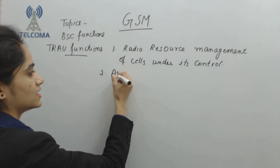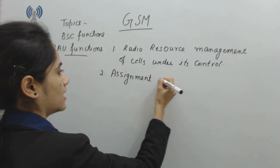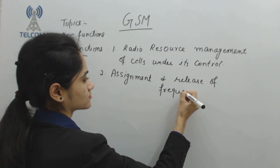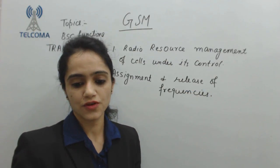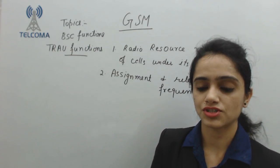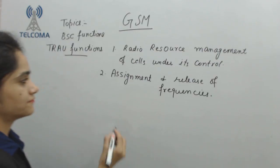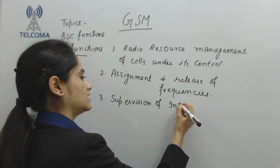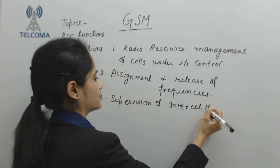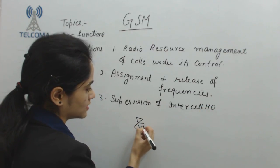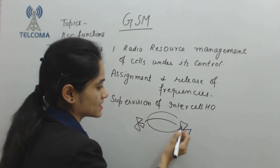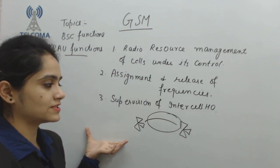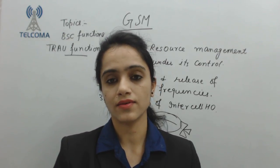The next function is assignment and release of frequencies — to assign frequencies and to release frequencies to a cell. This is also a function of BSC. Then we have supervision of intercell handover. Whenever we are moving from one cell to another, this is known as intercell handover, and handover control lies with the BSC.